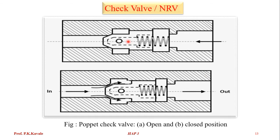In another type of check valve, the geometry of the restricting element has changed — instead of a spherical ball, it is a wedge shape. This is called a poppet-operated check valve. The difference is in the geometry and performance; the reliability of this poppet check valve is somewhat better compared to the spherical type, and leakages are less.